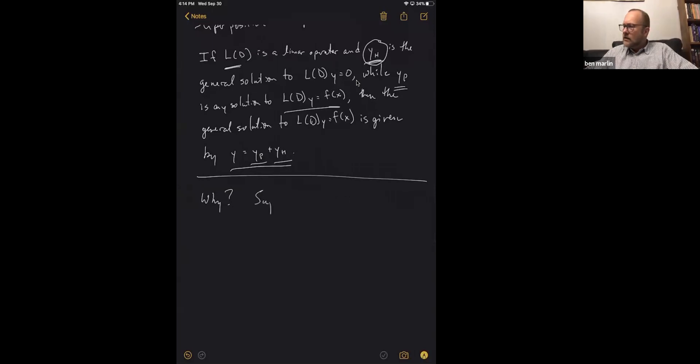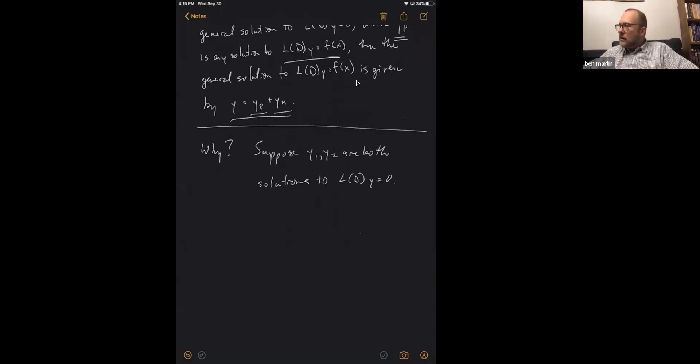Well, let's suppose that y1 and y2 are both solutions. So if we take y1 minus y2 and form a new function just by looking at that, that y1 minus y2 is going to be just the difference between those two functions. If you hit that with your L of D...